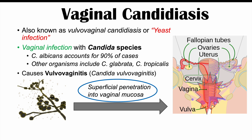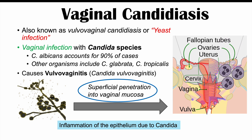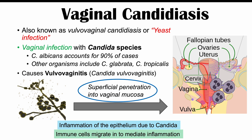When candida species penetrate into the vaginal mucosa or the epithelial lining of the vagina, it can lead to inflammation. Once they have infiltrated into the epithelium, the patient's immune cells — including monocytes and polymorphonuclear leukocytes — will migrate in to deal with the infection, but at the same time will cause inflammation and other signs and symptoms.